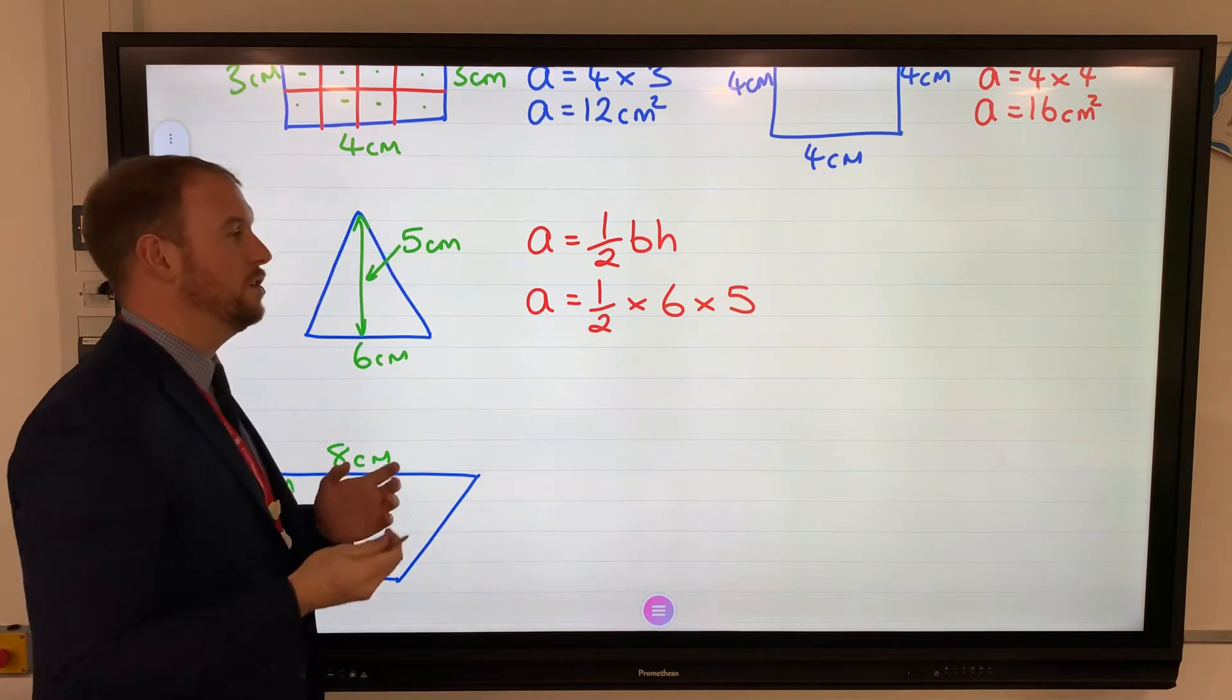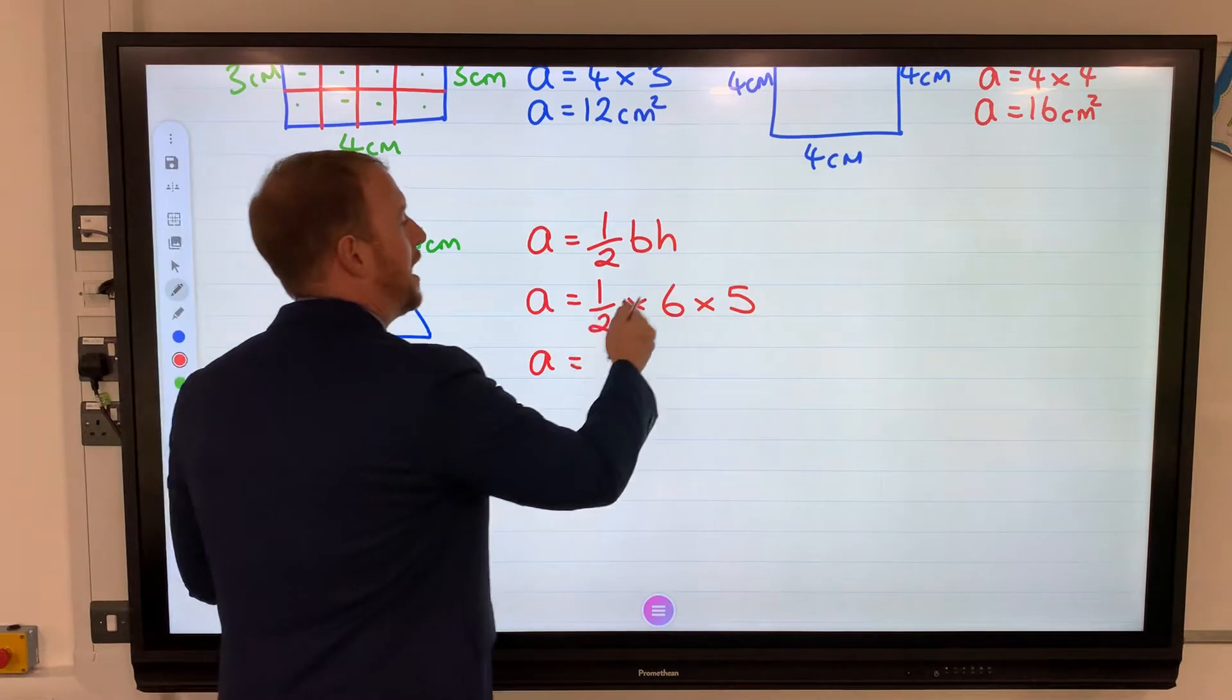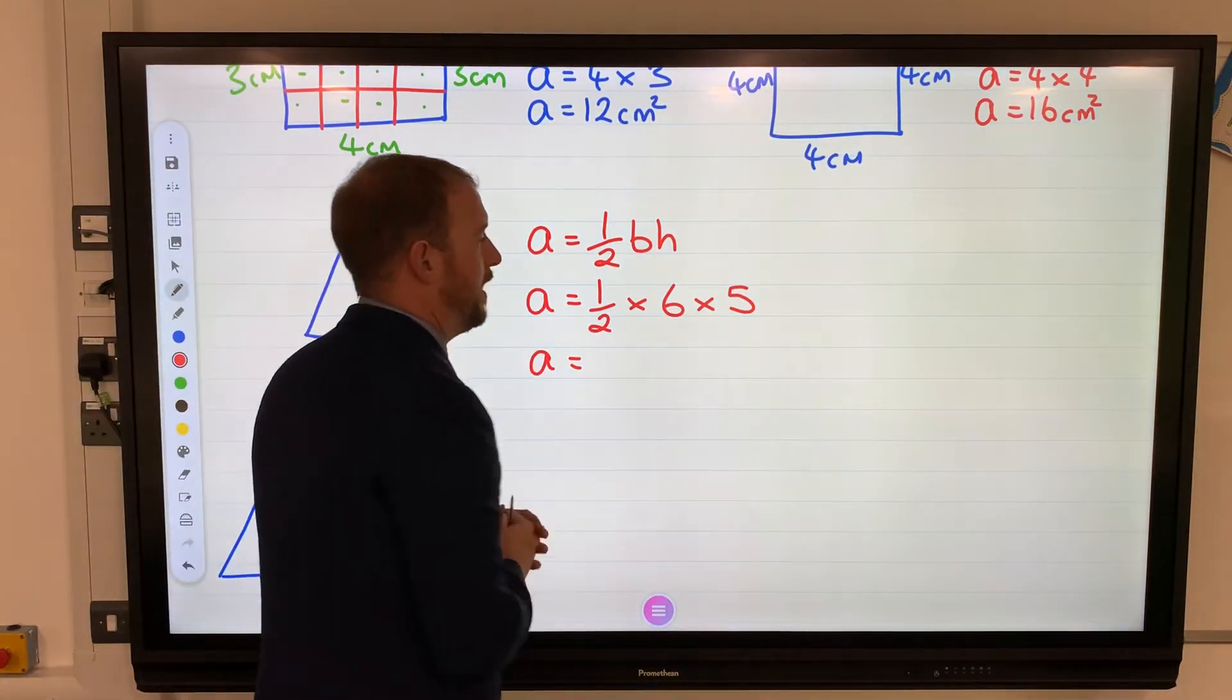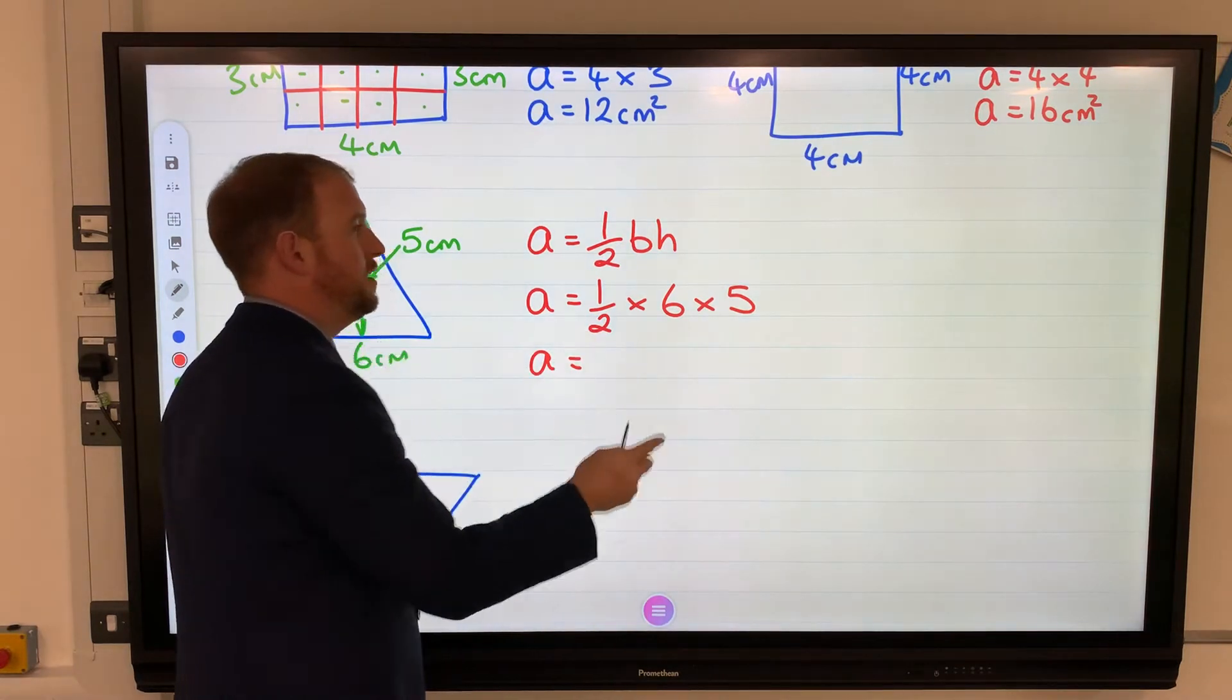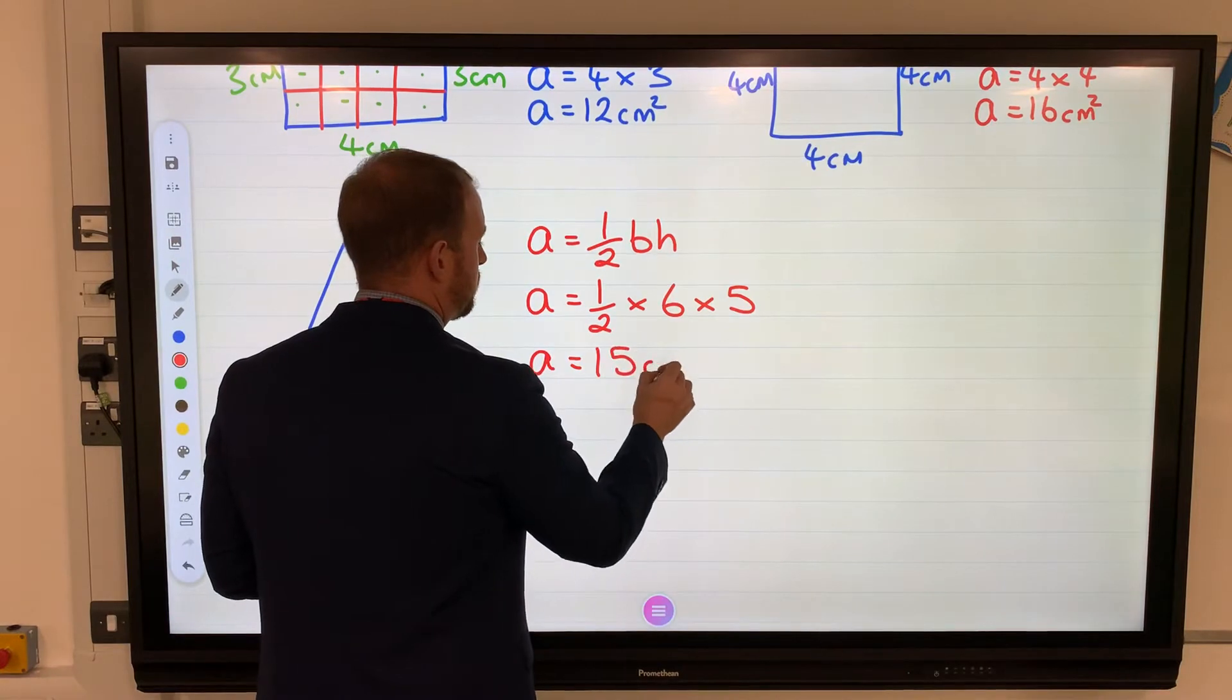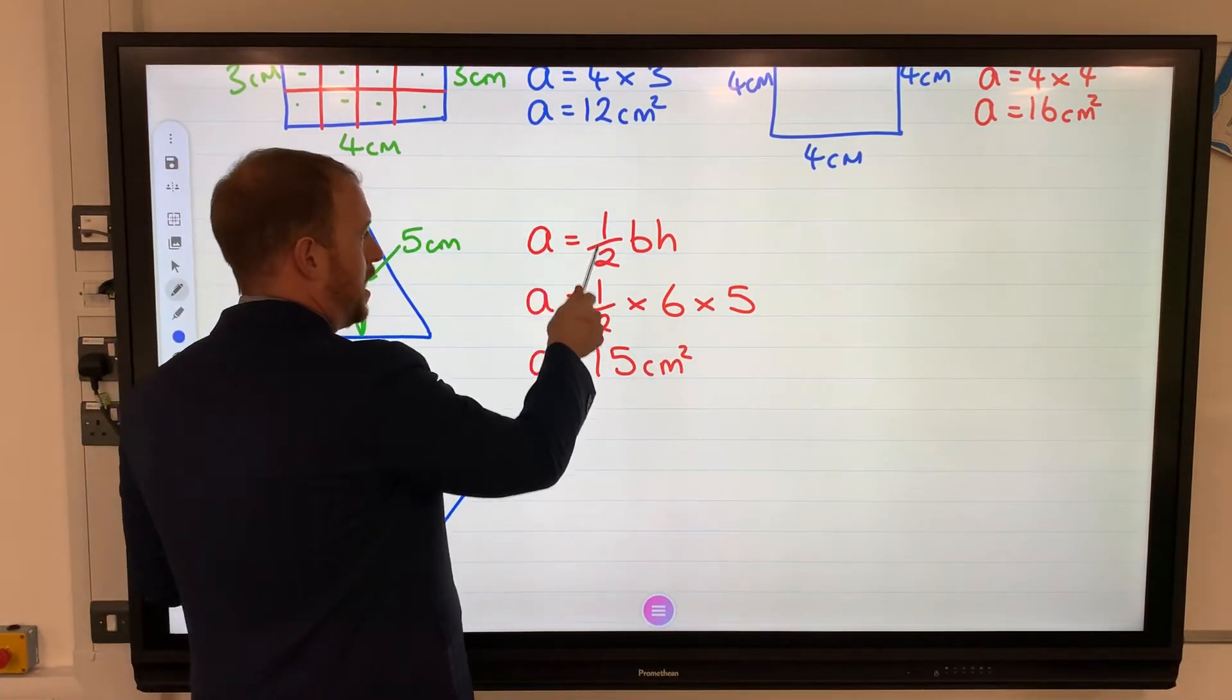We could do this in two different ways: half of six which is three, times five to make fifteen. Or we could do six times five to make thirty, half of thirty is fifteen. You'll notice the answer is still the same either way. So different formula for that one: area equals half the base times the height - formula, substitution, answer, units.